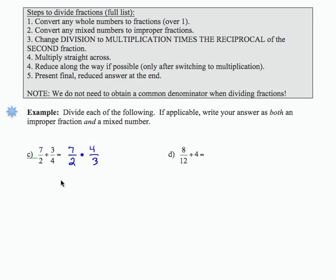Now I have 7 halves times 4 thirds. What I'm going to do is leave the 7 halves the same. I'm going to write 4 thirds as 2 times 2 over 3, because I see that I have a 2 in the denominator here.